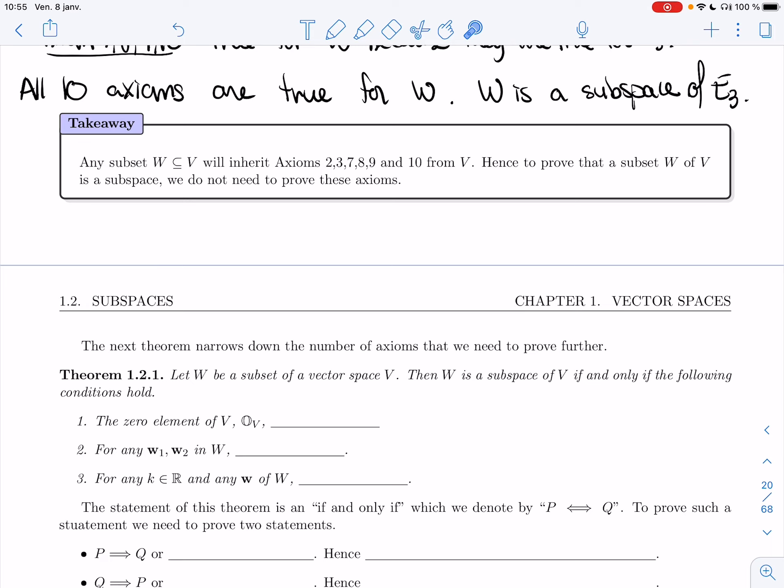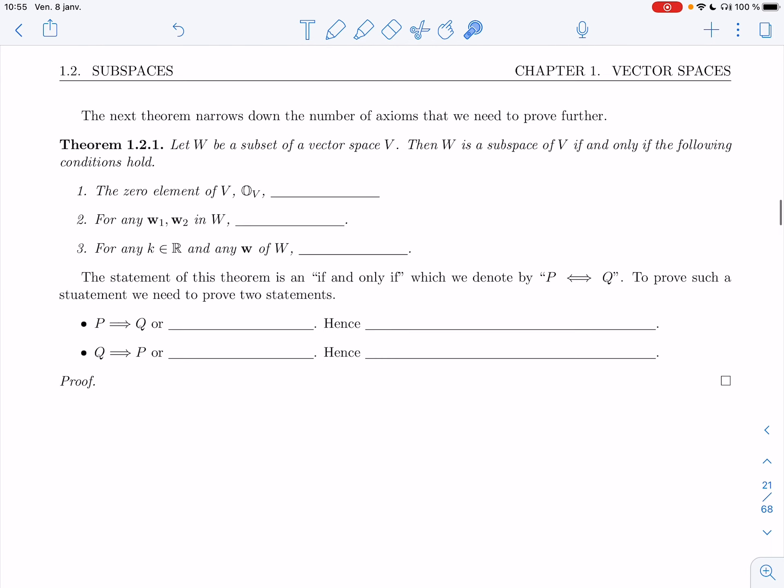We will, in this video, prove this theorem, Theorem 1.2.1. I'm going to prove that if W is a subset of a vector space V, then W is a subspace of V if and only if the following conditions hold. So instead of having to prove all 10 axioms, we'll have three properties to prove, and that will be much shorter to do.